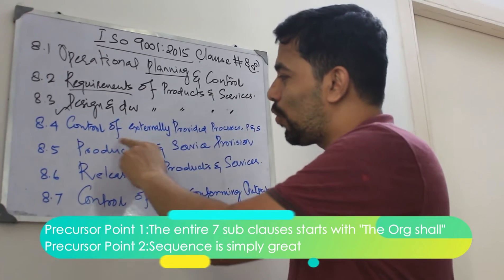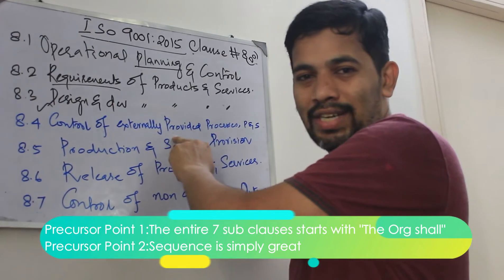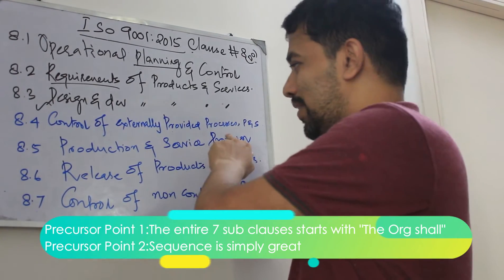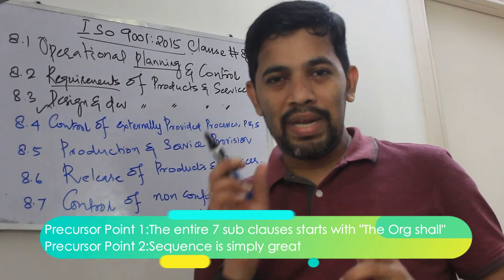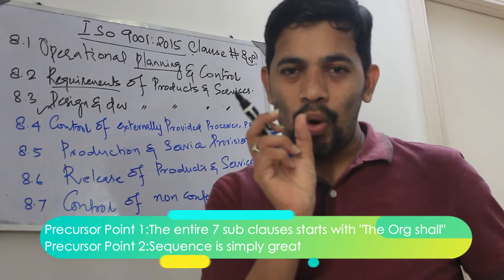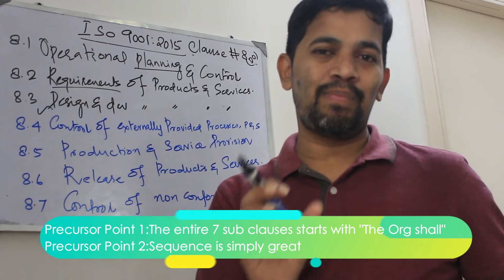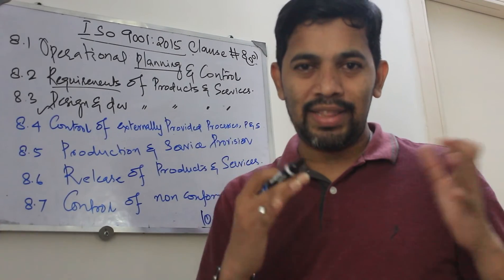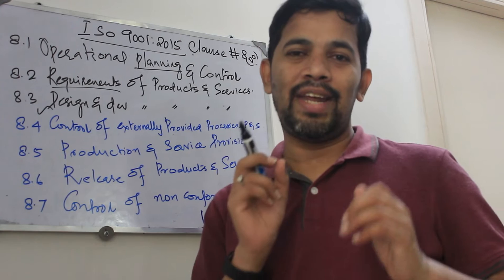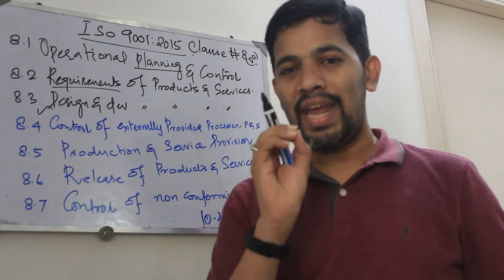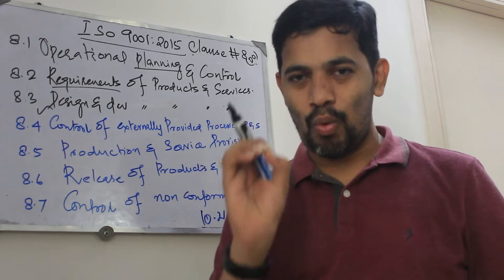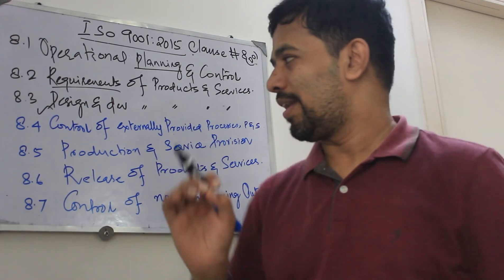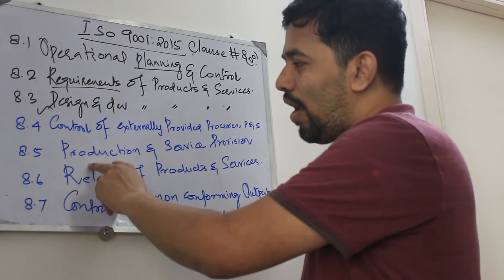After design and development, you will think about whether to outsource or manage within the organization — that is called control of external provider processes. External provider is something called supplier; there is no word called 'supplier' in the standard. It has used the word 'external provider,' which means supplier.